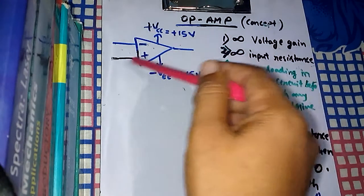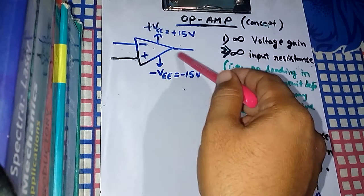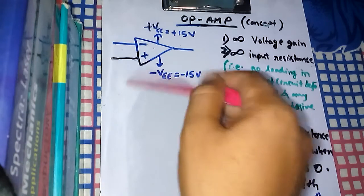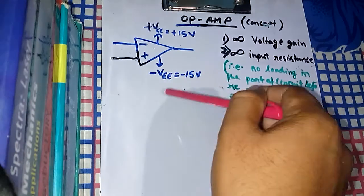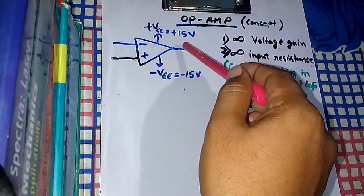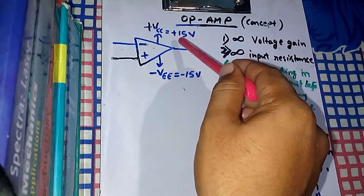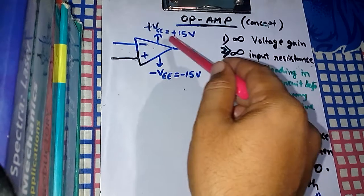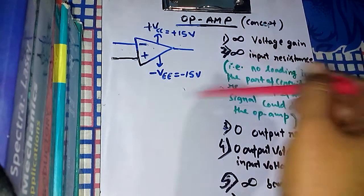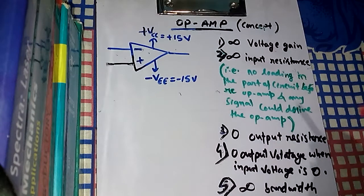Suppose according to the gain the output should be 100V — if the gain is very high and the calculation gives A×V_in = 100V — but remember, you will not get 100V because the output will saturate at around 14–15V. The output saturates below 15V. This is important to remember.